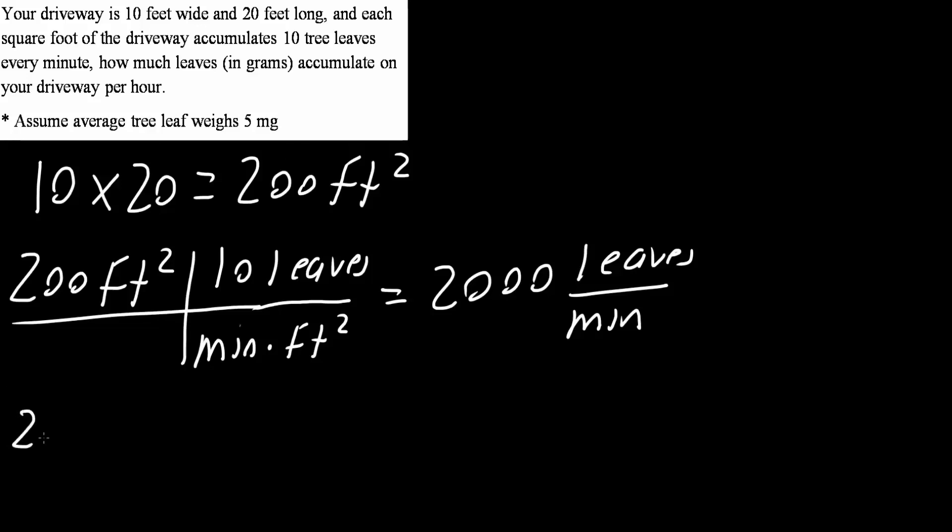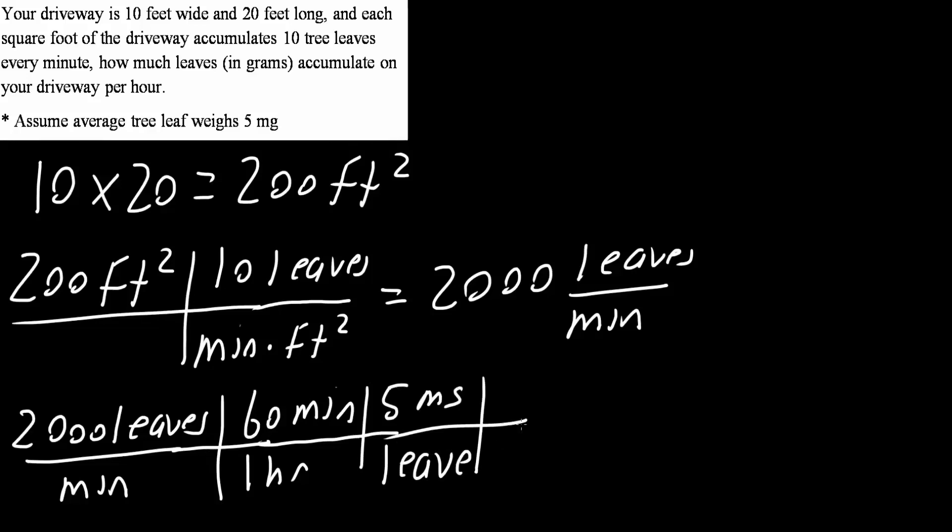Next we could say that 2000 leaves per minute. We know that 60 minutes is one hour. So now we have per hour. And we know that one tree leaf is five milligrams. And finally we know that a thousand milligrams is one gram.